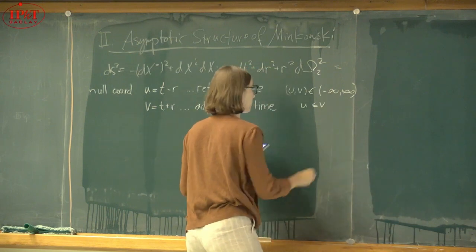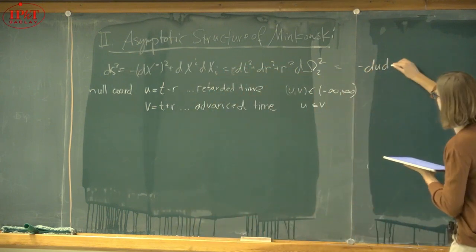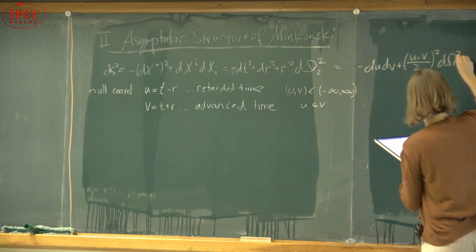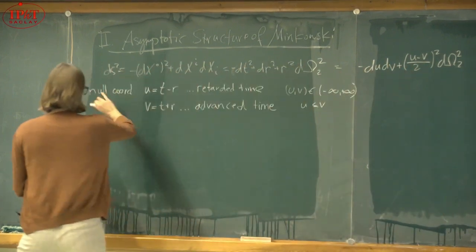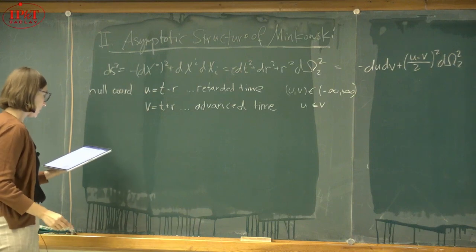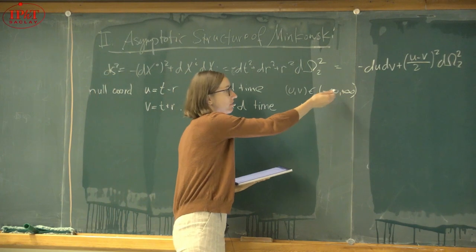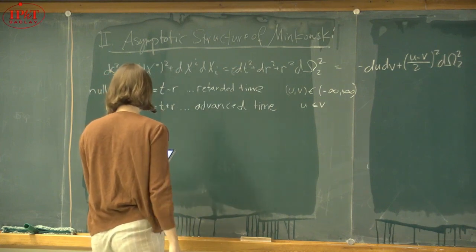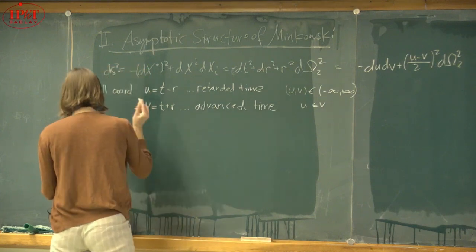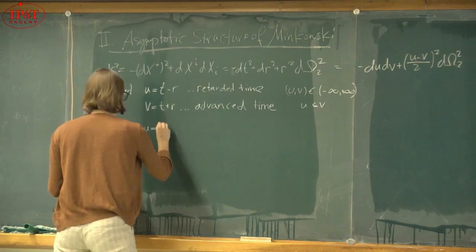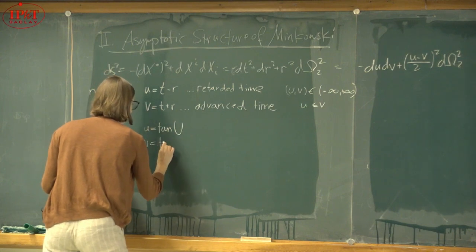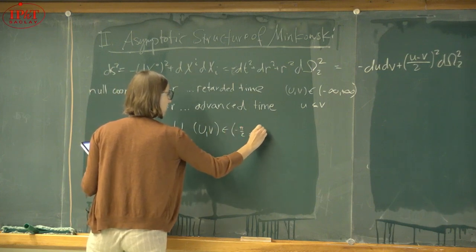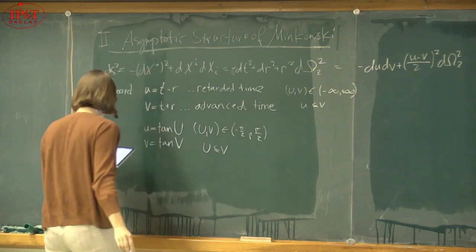In null coordinates, the metric makes causal motion more manifest. To bring infinity to finite distance and use Penrose diagrams, we introduce compactified coordinates U = arctan(u) and V = arctan(v), where capital U and V range between −π/2 and +π/2. The line element gains a prefactor 1/(cos²U cos²V) multiplying −4 dU dV + sin²(U−V) dΩ₂². Multiplying by the inverse conformal factor gives the metric on compactified Minkowski space.